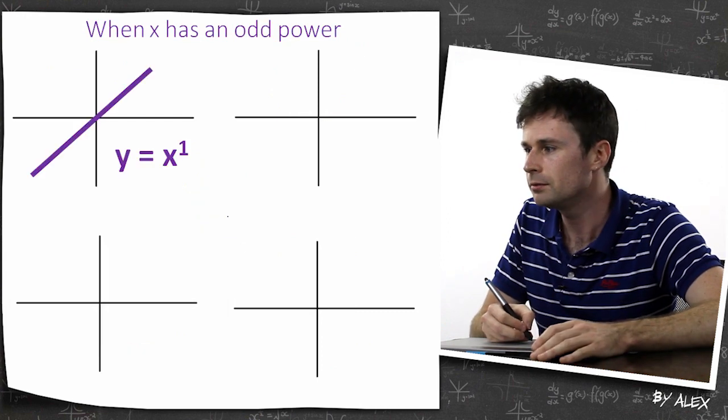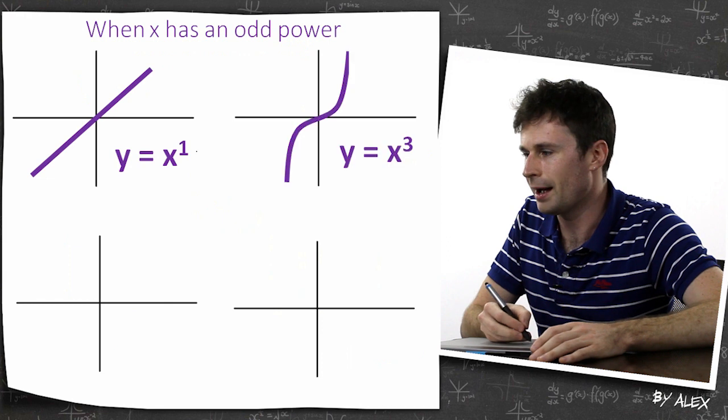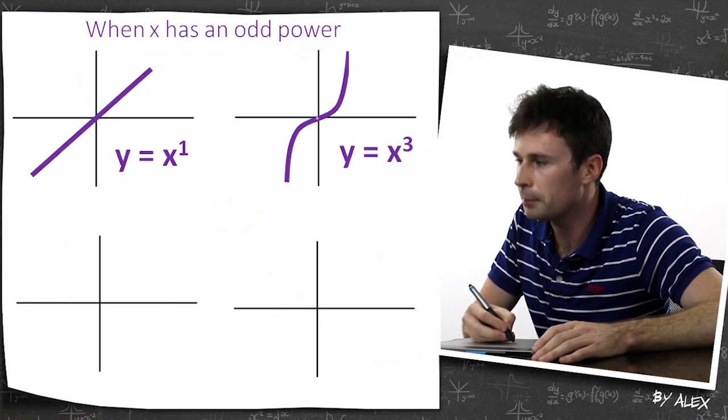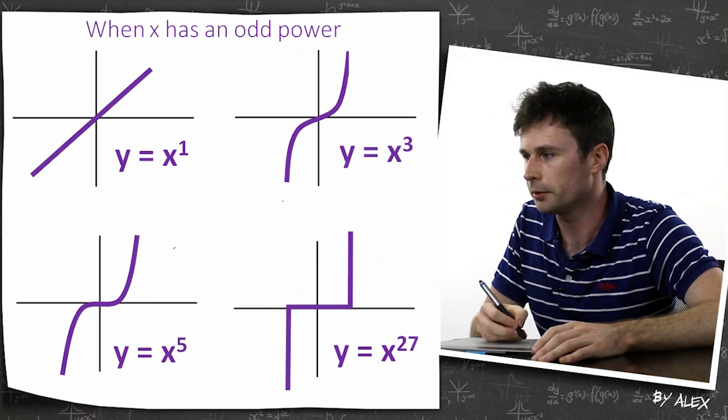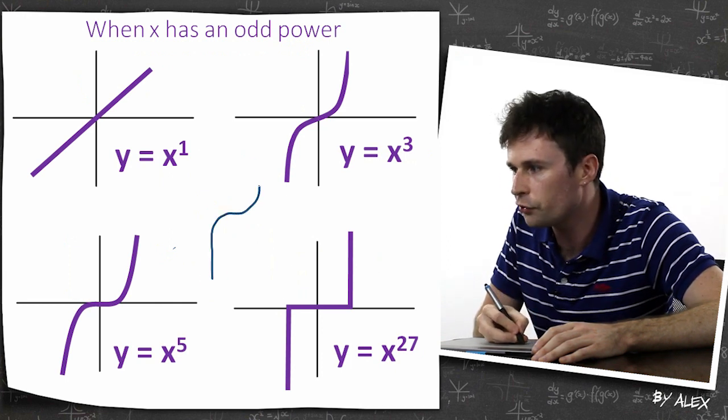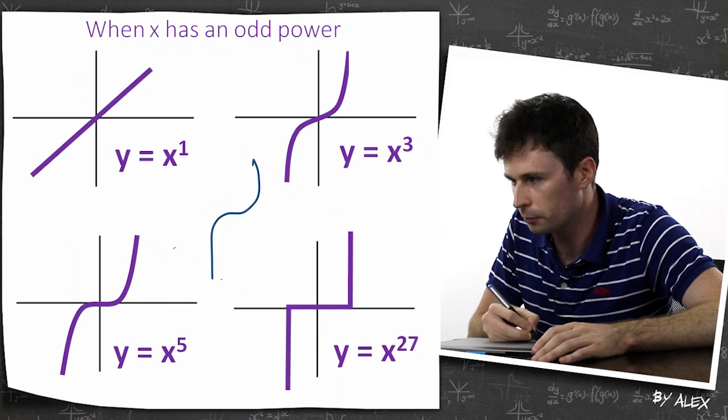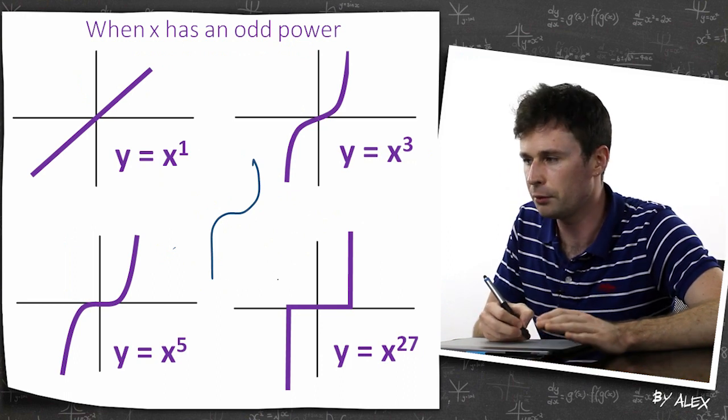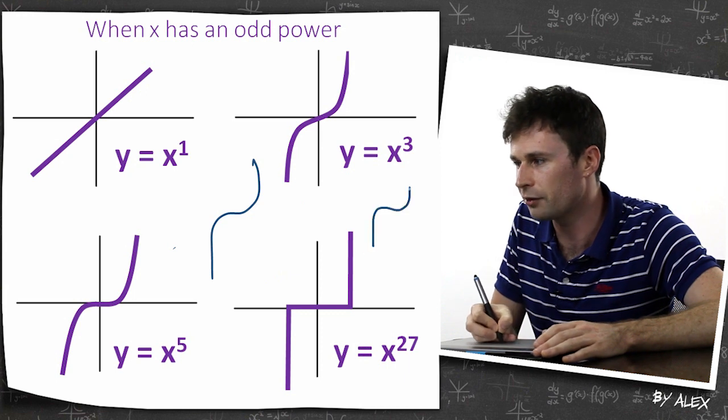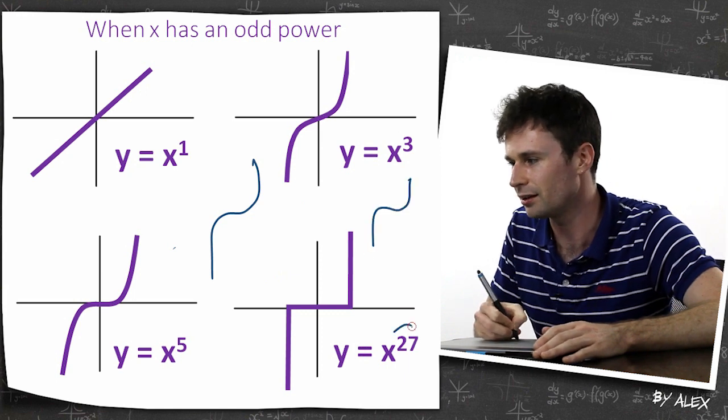When x has an odd power, well, it starts off as x to the power of 1. Then we've got x cubed. But from here, again, it just gets squarer and squarer. So again, it's always going to be in this sort of shape where it's going from low to high. And you can basically, if you've got any powers which are odd, you know it's going to be that sort of shape. And they're not going to give you anything ridiculous like this anyway.